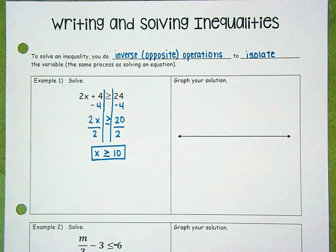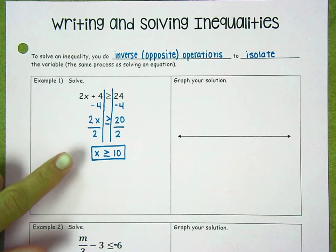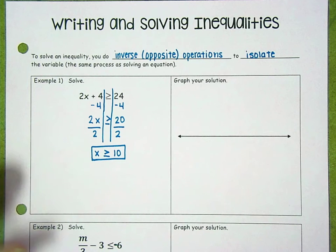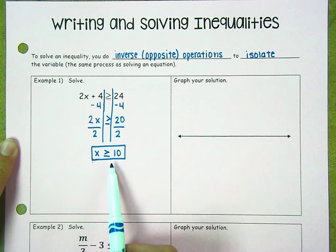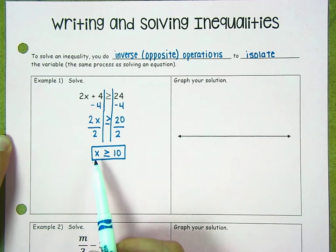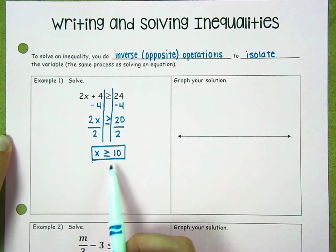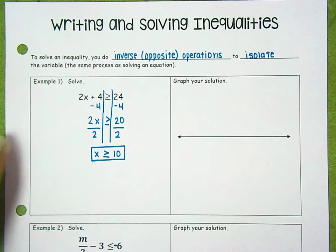Now we can think about, we can check this solution. So we think about what are some possible solutions for x. In this case, we know x has to be greater than or equal to 10. So x can be 20. 20 is greater than or equal to 10. I can go back and I can actually check my solution by plugging in any of those possible values.